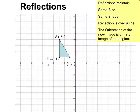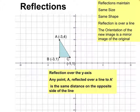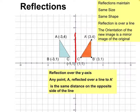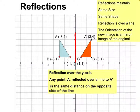Let's start by reflecting over the y-axis. When we reflect over the y-axis, it becomes our mirror, and the reflection is going to be on the opposite side. You'll notice the orientation has changed, because points that were close — like point C, which was close to the line we're reflecting over — become C prime, the closest point on the other side. B was farther away than C, so B prime is farther away than C prime. It's the same distance on the opposite side.